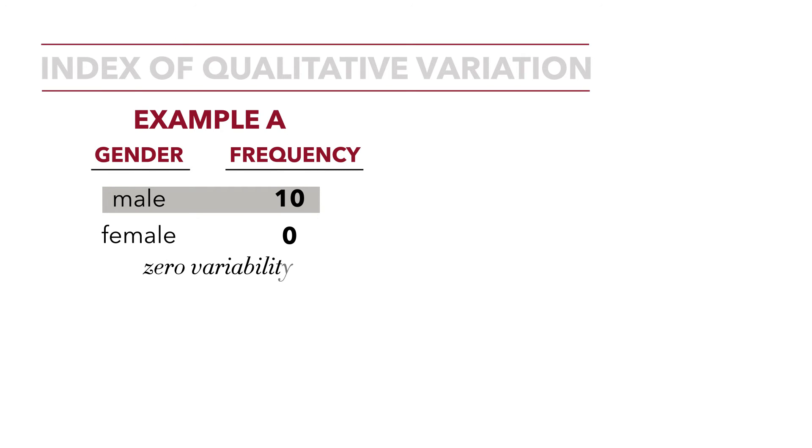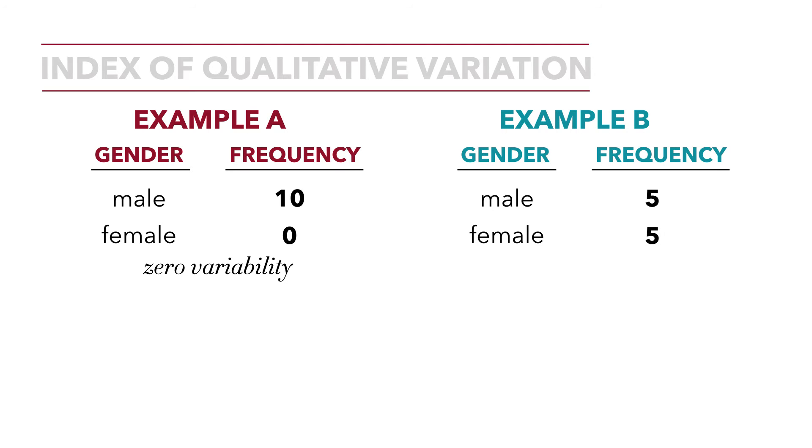There's zero variability. If we contrast that with a second imaginary distribution, using gender again as our example, we have males and females, but this time our distribution shows there are five males and five females, a total of 10 observations. This is the most variability possible.